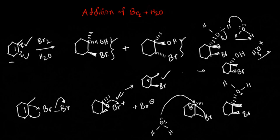Don't forget that we are also forming the enantiomer of this product, and that is our second product. So this is our other product that can also form in this situation. This is the mechanism when you react bromine in presence of water with an alkene. Thank you.